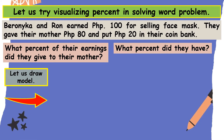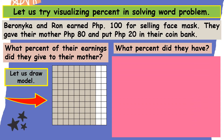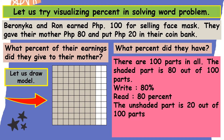Let us show the model. Out of 100, they gave their mother 80 pesos and kept 20 pesos for their coin bank. There are 100 parts in all. The shaded part is 80 out of 100 parts — write and read as 80%. The unshaded part is 20 out of 100 parts — write and read as 20%.